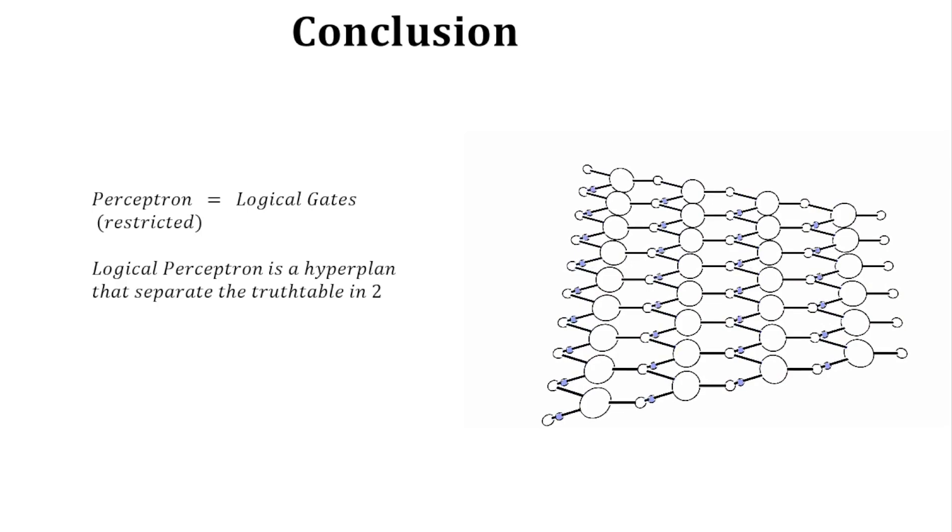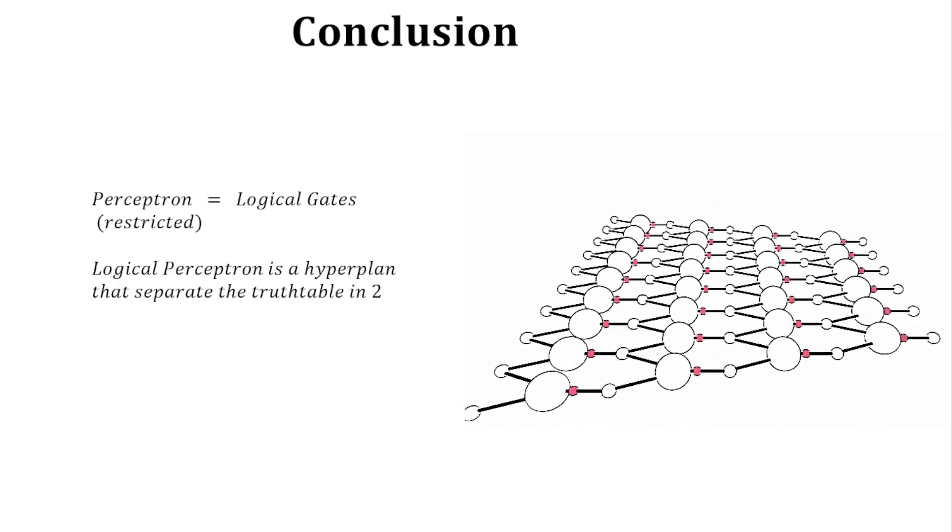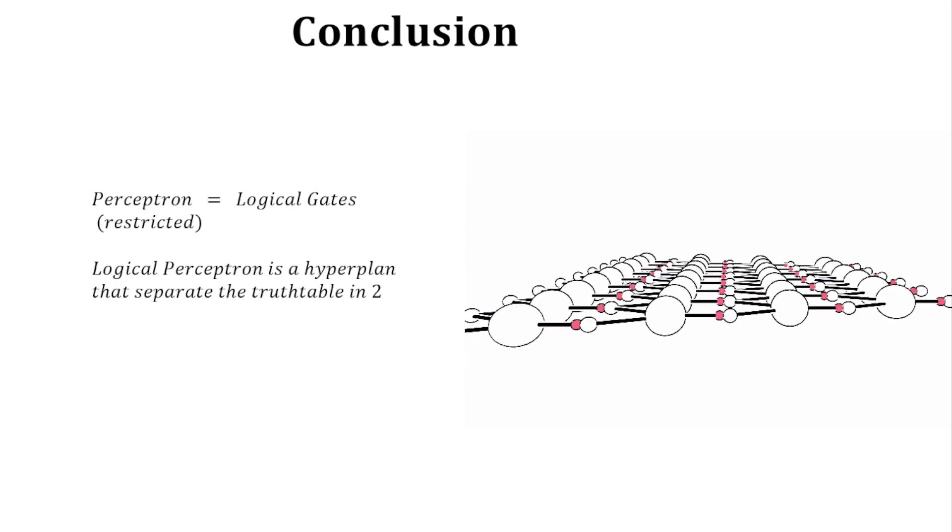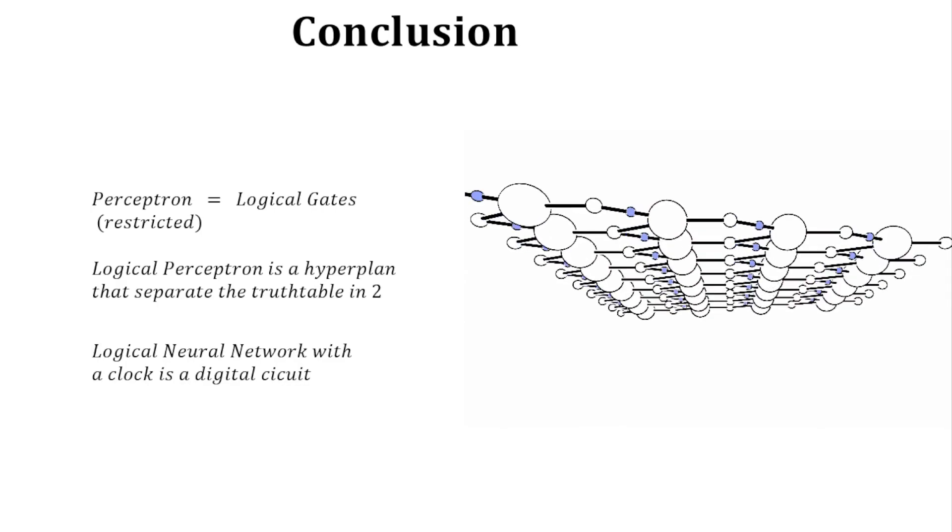Then, we have seen that if a logical perceptron is a logical gate, then a logical neural network is really close to a digital circuit, but it needs a change in the computation flow.